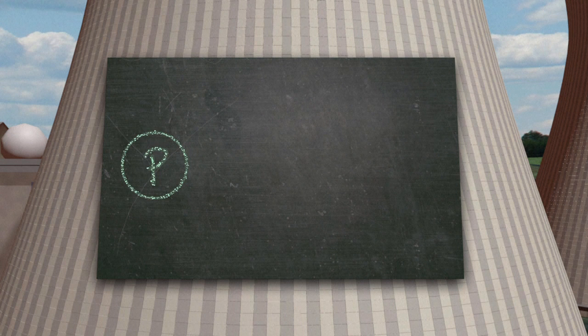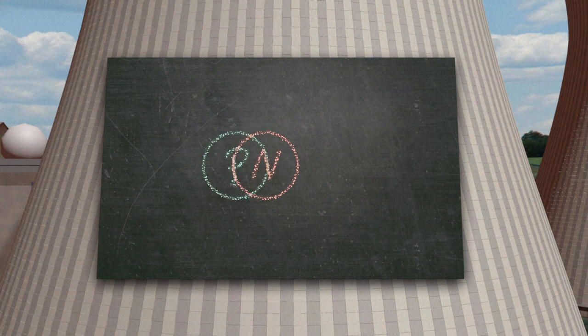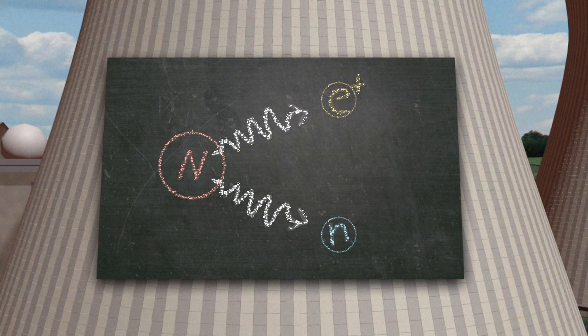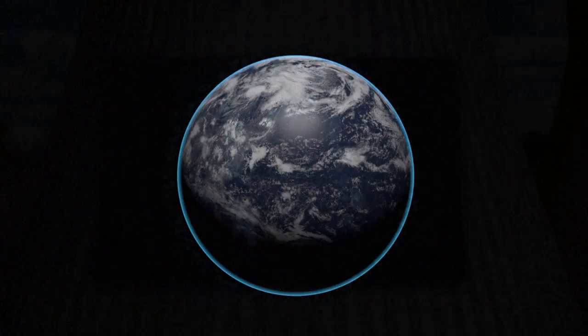For example, in the process known as beta-plus decay, energy is used to convert a proton into a neutron while emitting a positron and an electron neutrino.